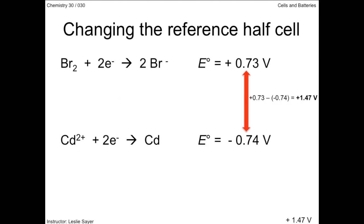So finally, the potential difference between the bromine half reaction and the cadmium half reaction in our bromine-cadmium voltaic cell is still positive 1.47 volts — not uncoincidentally, the same potential difference as when the hydrogen half reaction was the reference half cell.